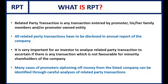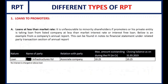We will understand through live examples the various ways in which promoters can do something unfavorable to minority shareholders. The first type of related party transaction: suppose a company you want to invest in is giving a loan to a promoter.